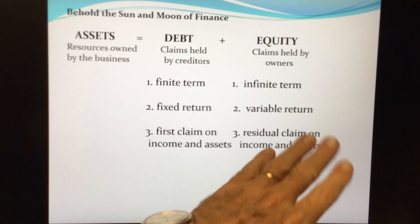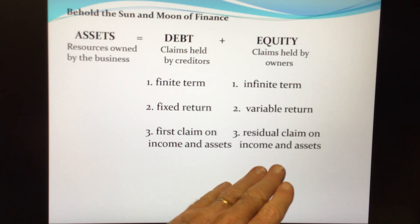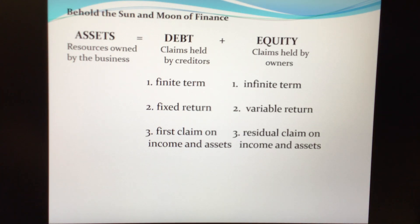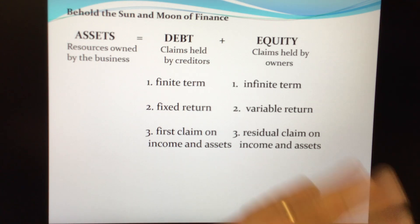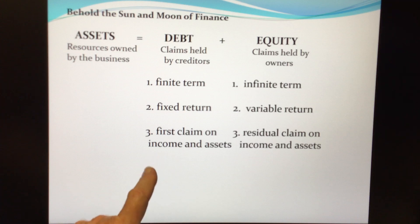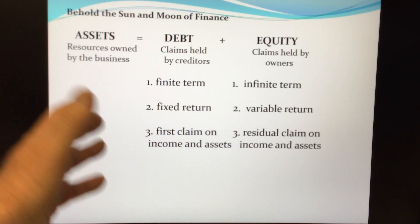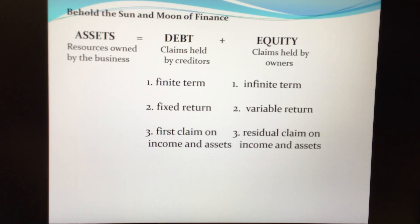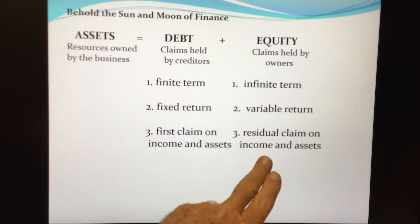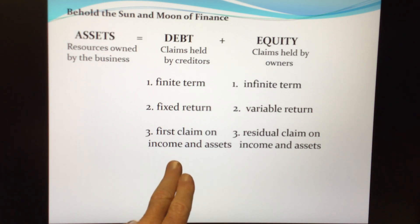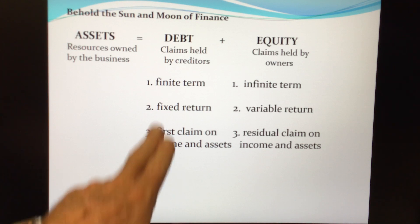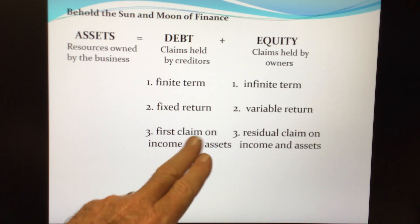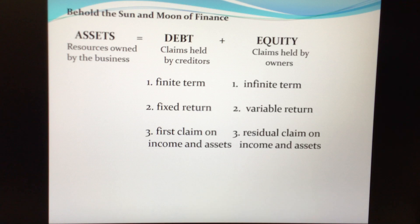In broad terms, equity is riskier than debt. For a specific company like Amazon, Amazon's equity is riskier than Amazon's debt. Now, that doesn't mean the equity of Company X is necessarily riskier than the debt of Company Z. You could have a company going through bankruptcy whose debt is very questionable compared to, say, Amazon's equity.